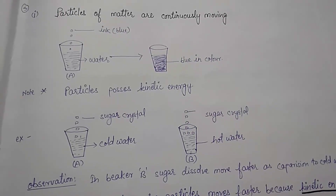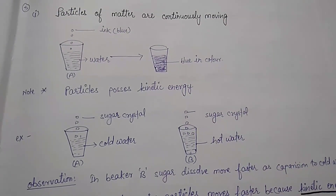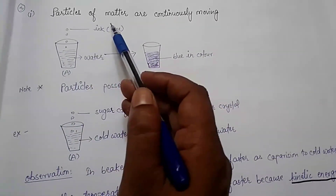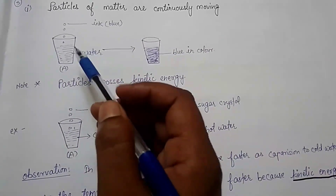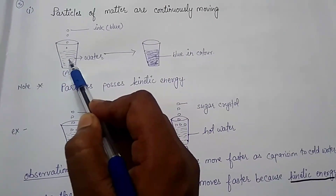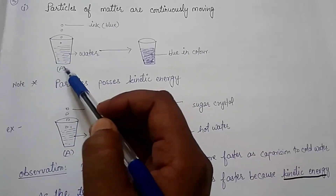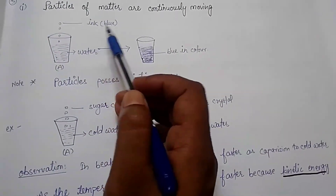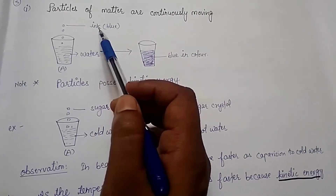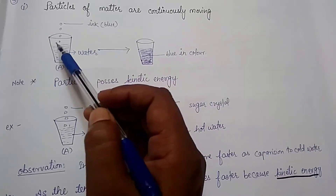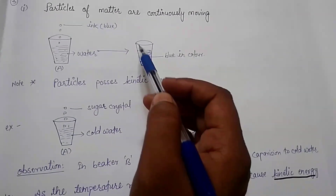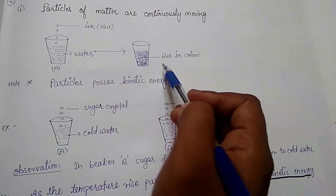Our third topic is: let us try to understand the behavior of particles with an example. Take a glass and fill it with water. We know that water is colorless. Now add a pinch of ink of any color into this glass. After a while, we observe that the whole amount of water becomes blue in color.